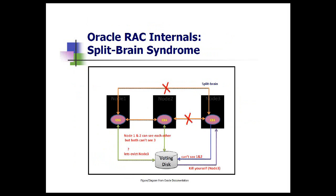In this example, we have a three-node cluster: node one, two, and three. Node one and two can communicate with each other over the interconnect and send the network heartbeat. However, nodes one and two cannot send the network heartbeat to node three, because maybe there is a problem in your interconnect or maybe there is some problem with the NIC card on node three.